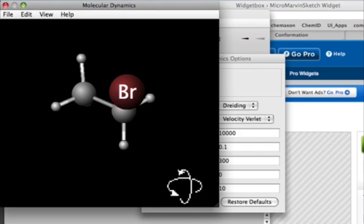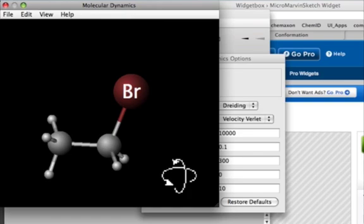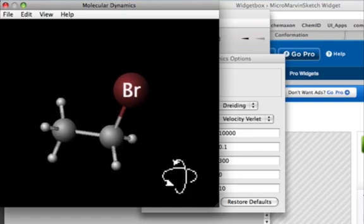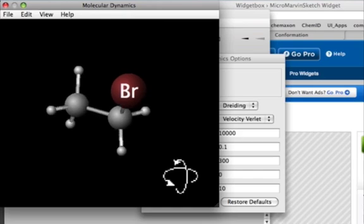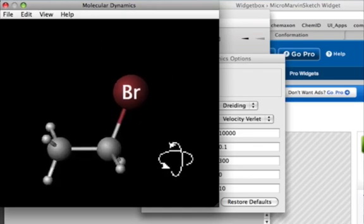The thing you notice most perhaps is that of all the atoms, the bromine moves the least. That's because it's the heaviest. And relative to the other ones, it's like a ball and chain just dragging that molecule down, slowing it down.